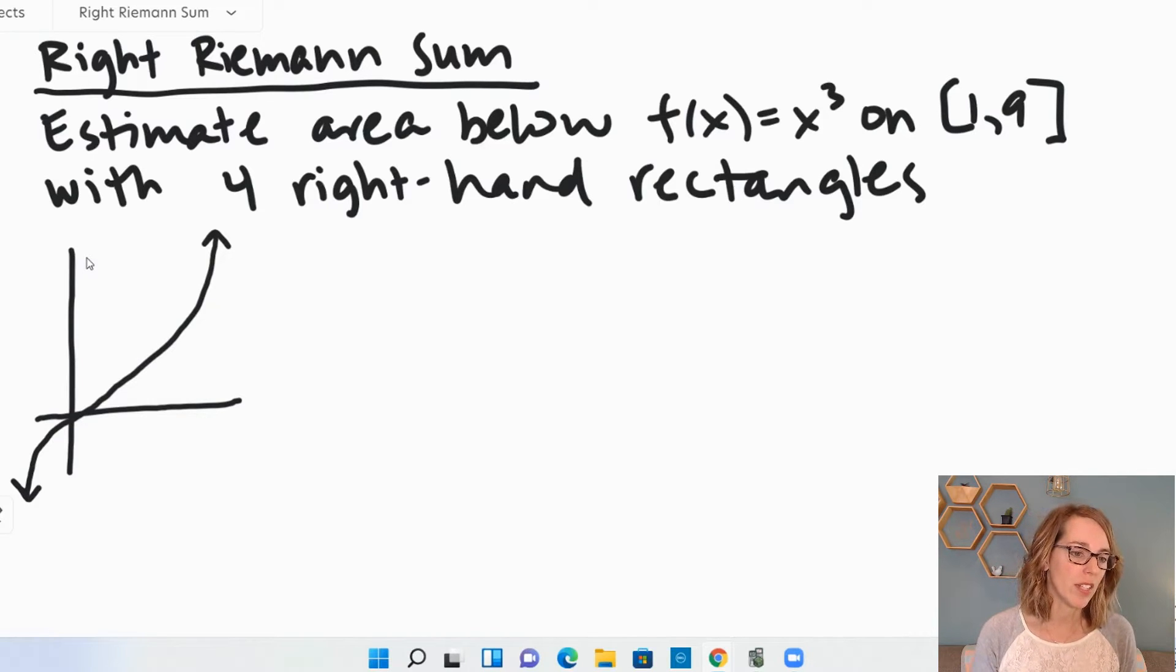As I'm constructing this, I want to go ahead and put in my interval 1 to 9. I want four rectangles on that interval. So I can start by figuring out what delta x is. Delta x is my width, so that's going to be the bottom width for each of those rectangles. To get that width...